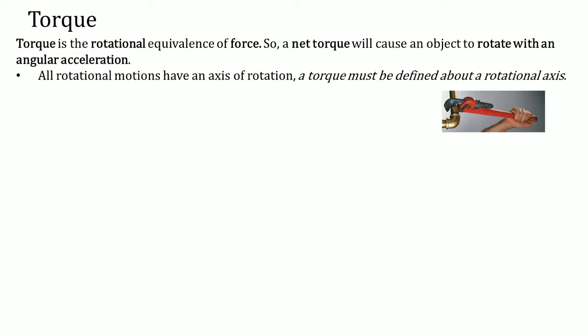All rotational motion has an axis of rotation. A torque must be defined about an axis of rotation. That axis of rotation is the pivot point or the center. In this image of the wrench, the hook next to the pipe is where the pivot point is, because that is how everything is turning.